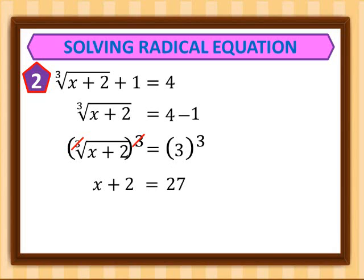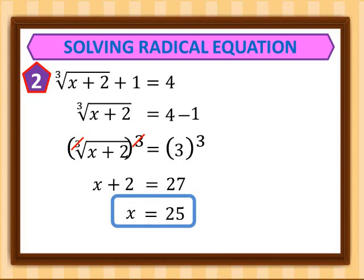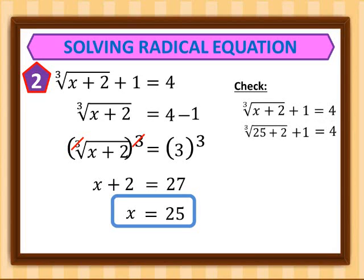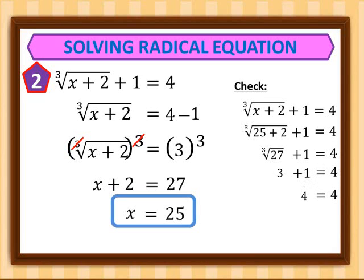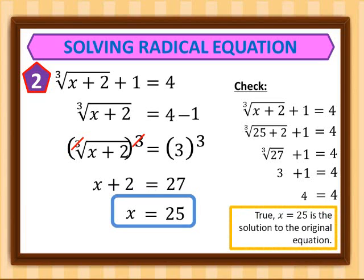We transpose the 2 to the right side, giving us 27 minus 2, which equals 25. To check, we substitute 25 for x in the original equation: cube root of 25 plus 2, plus 1 equals 4. That gives us cube root of 27, plus 1, equals 4. Since this is true, x equals 25 is the solution.